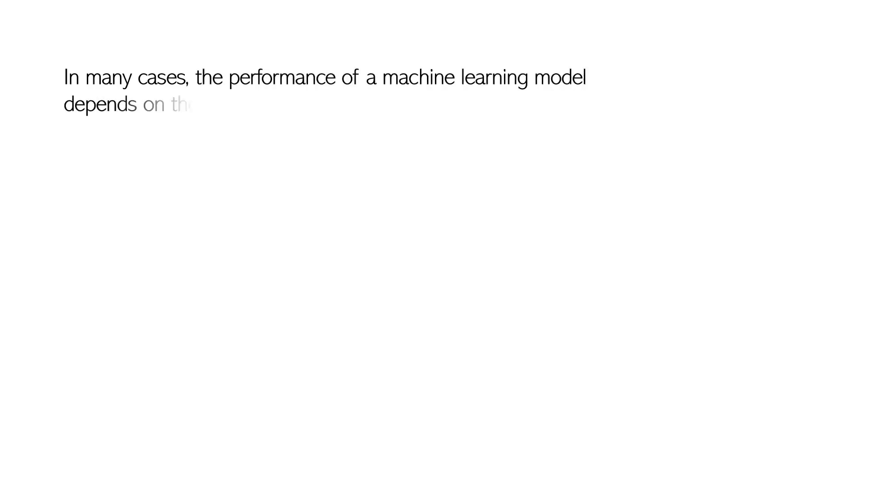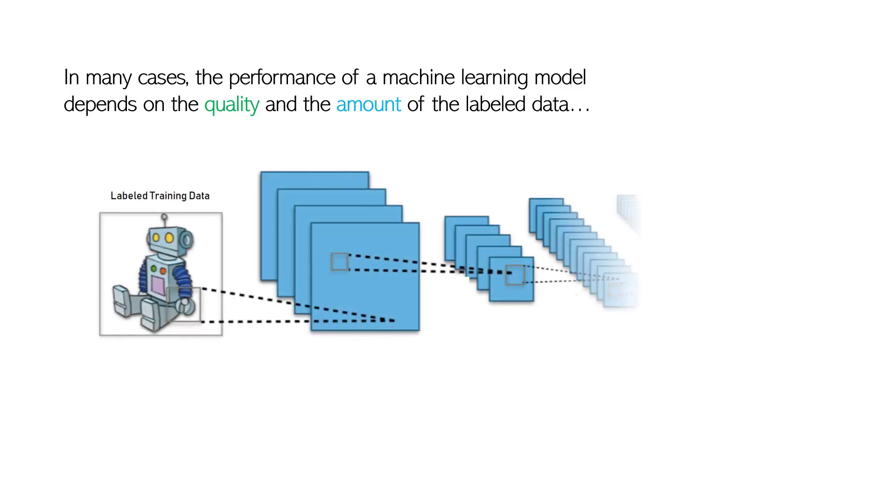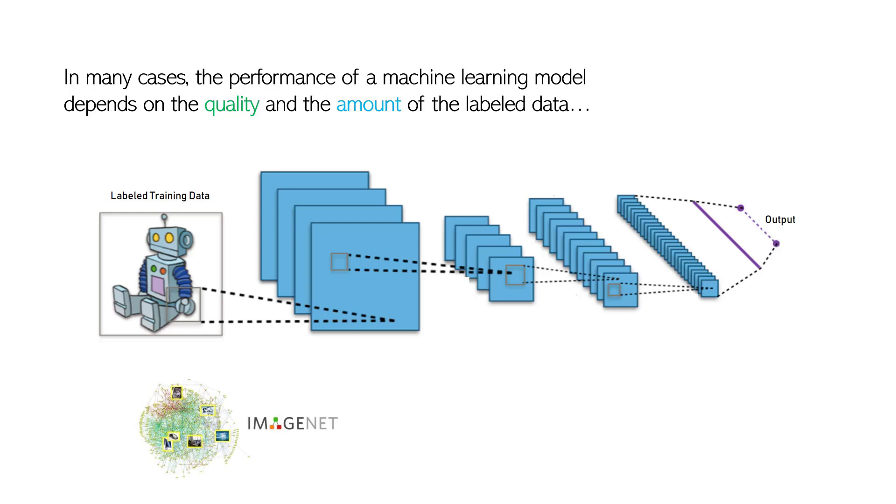In many cases, the performance of a machine learning model depends on the quality and the amount of the labeled data. Let's take a deep learning model as an example. With the trend of increasing layers, more data is needed for the training of deeper models.